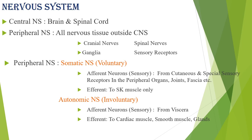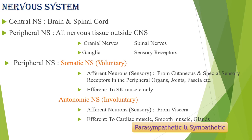The autonomic nervous system is divided into the parasympathetic and sympathetic divisions. Both control blood pressure, heart rate, secretions, and smooth muscle contractions, but in opposite ways — one increases and the other decreases these functions. They have wide functions throughout the body.